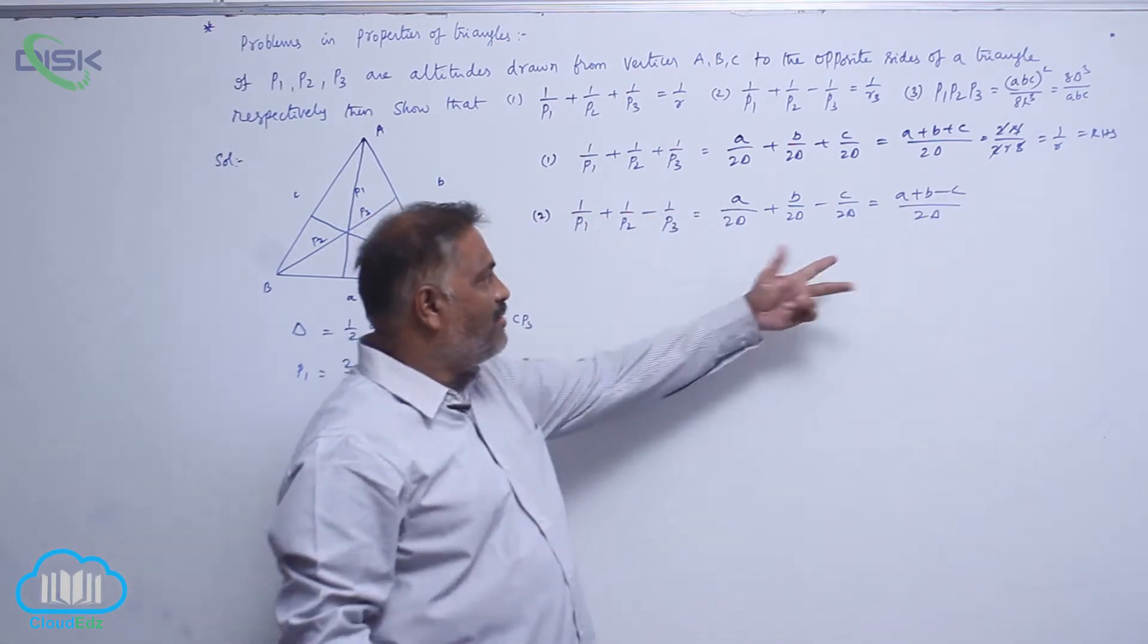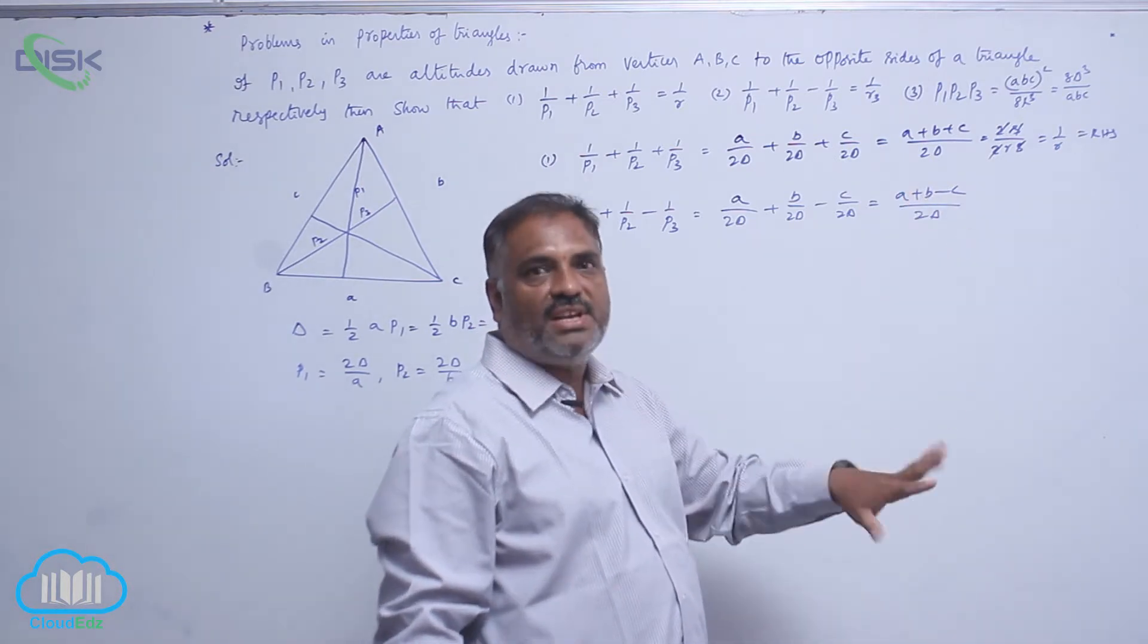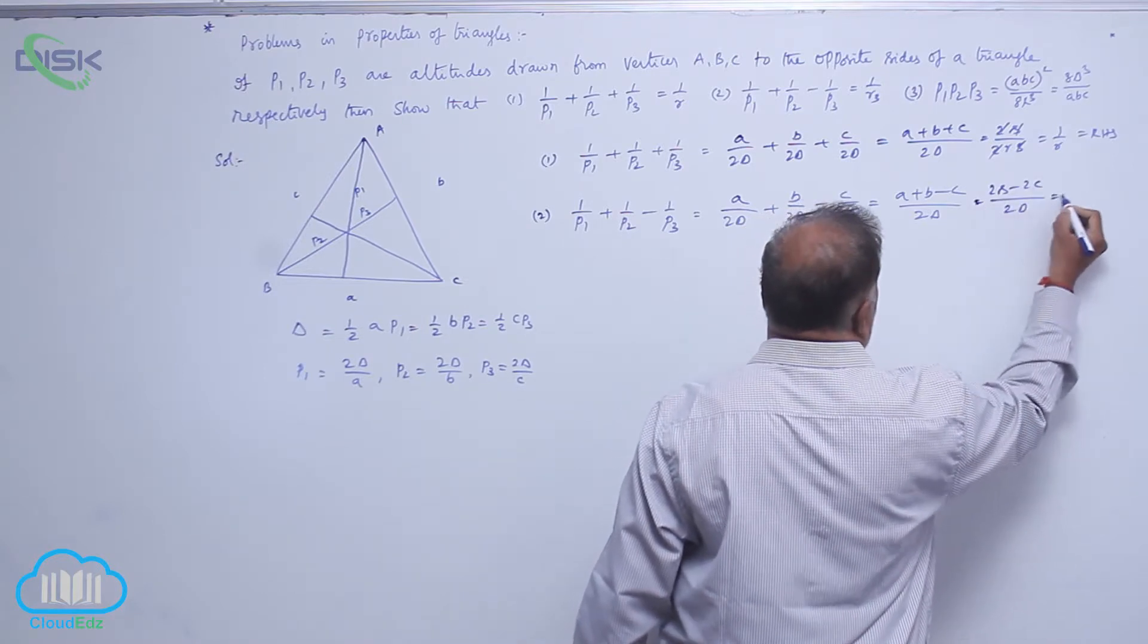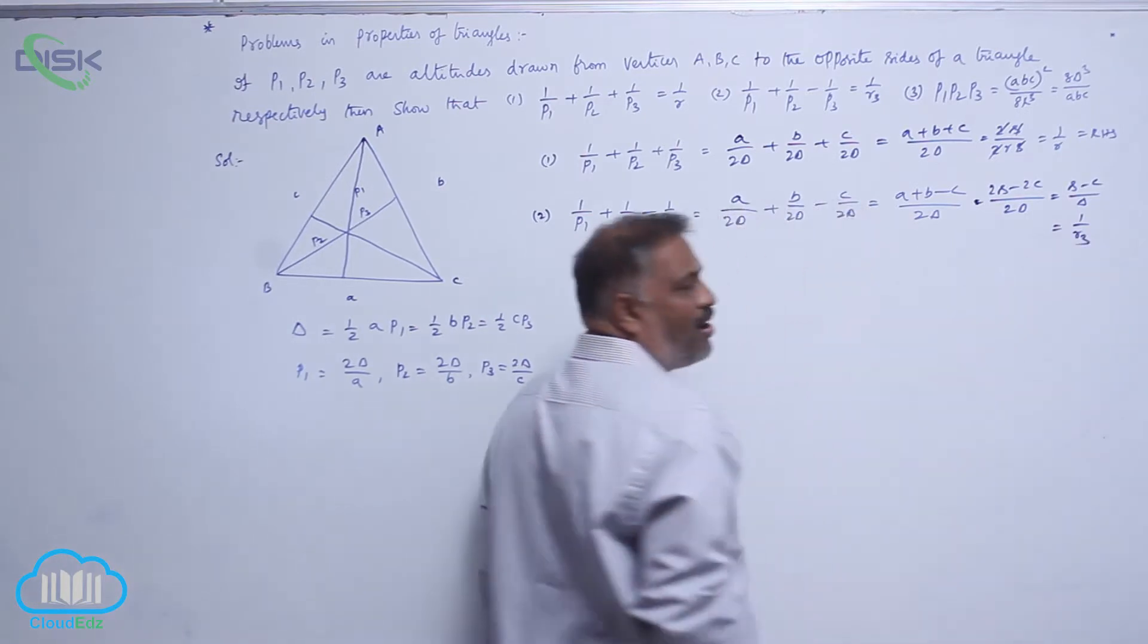We are already familiar with the notation. A plus B minus C is nothing but 2s minus 2c. This is 2s minus 2c by 2 delta, that is s minus c by delta, that is 1 by r3.